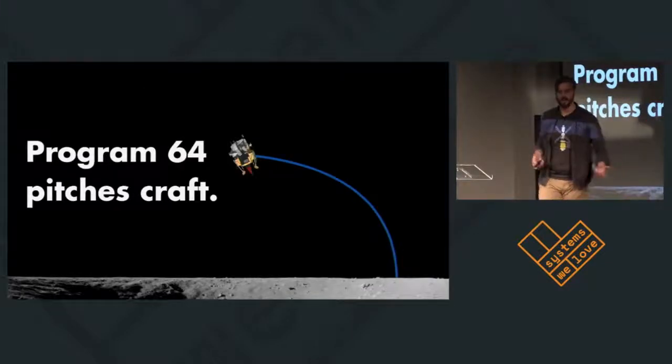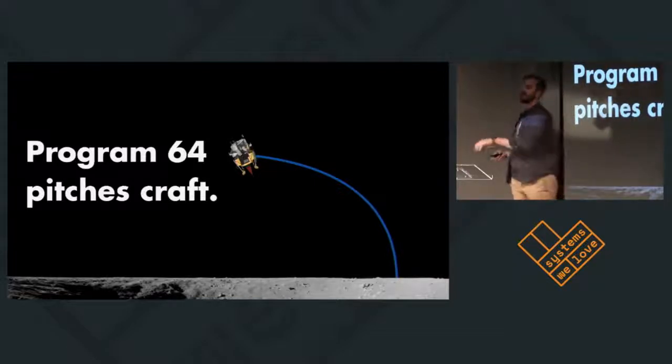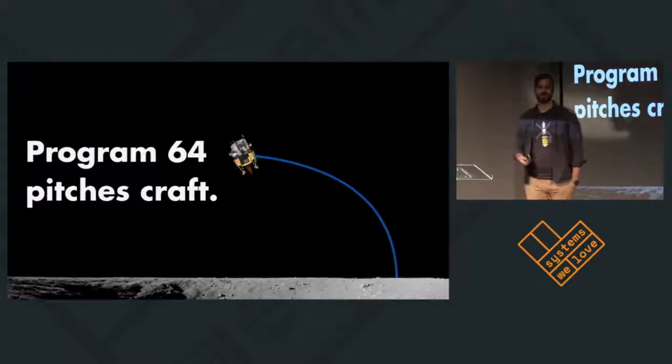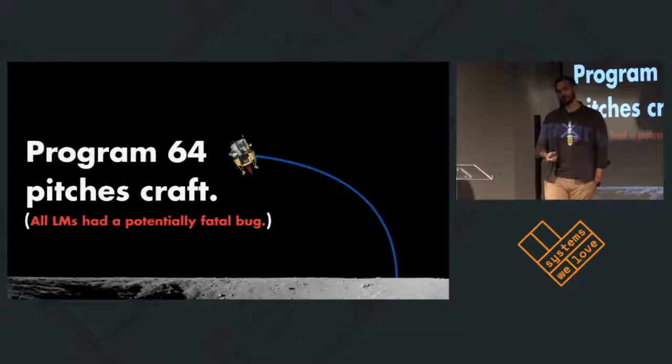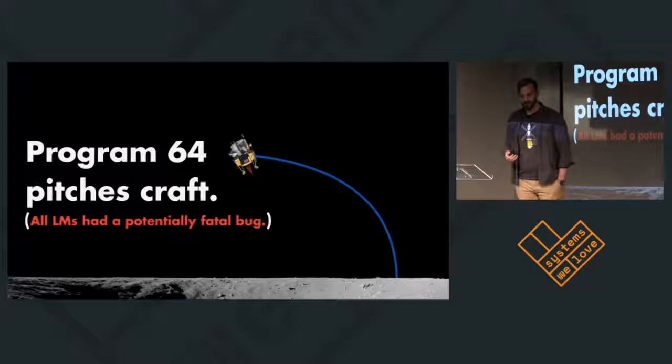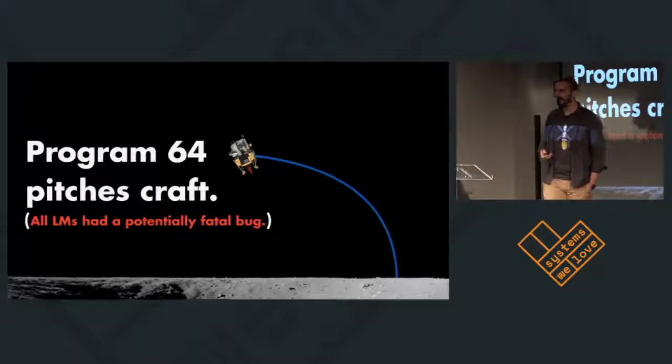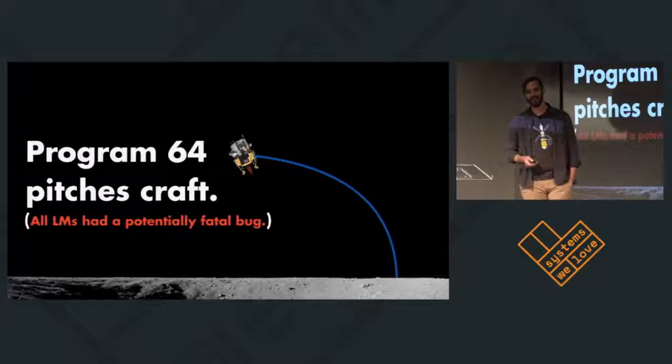So program 64, which the astronauts call up, pitches the spacecraft over. So the astronauts are actually able to look out of the window and see where they're going to land, because the lunar module computer has no ability to detect if it's going to land on a boulder or not. That's the responsibility of the astronauts. All of the lunar modules here had a potentially fatal bug. It turns out that there was a radar to detect if you were close enough to the ground to shut off your engine. Because of the programming of that radar, if you flew over a crater of a certain shape, you would get the signal that you had landed or were close enough to landing, and it would shut off the engine. It never did, but it is there.